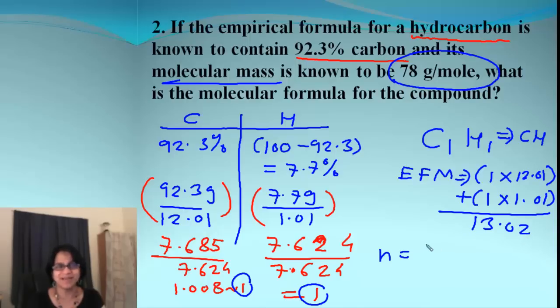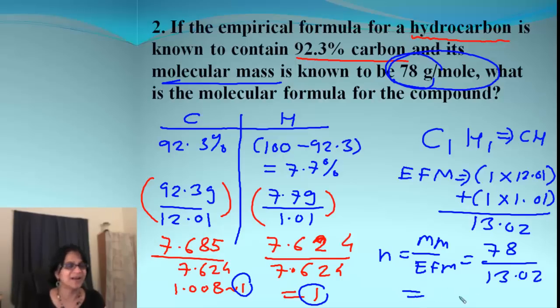So how do you get n? n is molar mass divided by empirical formula mass, which is 78 divided by 13.02. When we simplify, we get 5.99, which we can round to 6. So n equals 6.